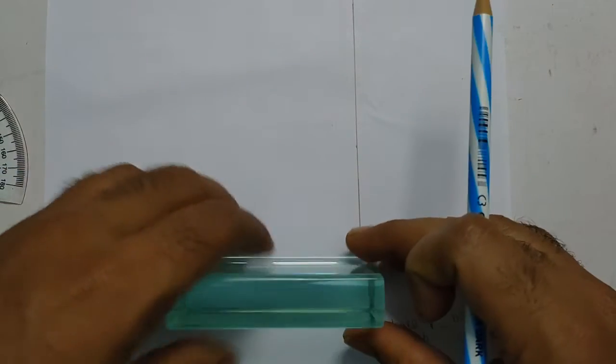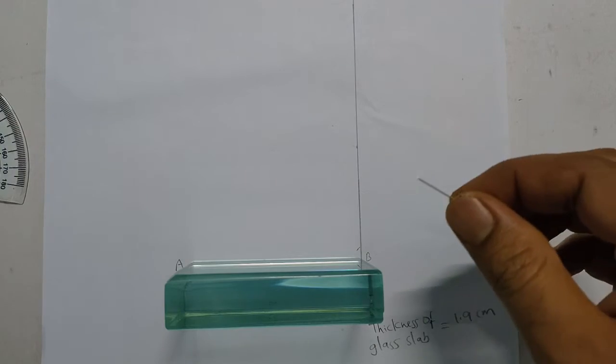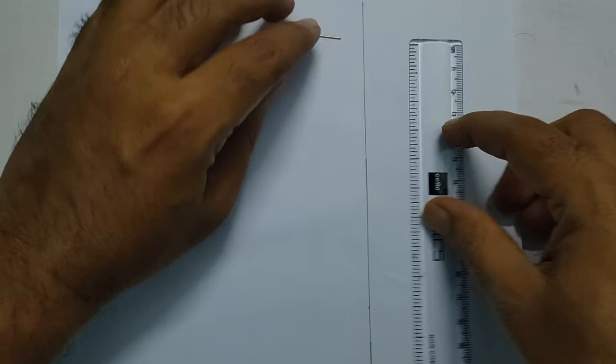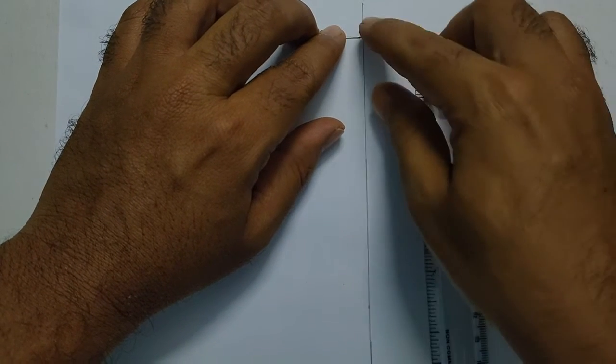Place glass slab again in the rectangle A, B, C, D. Now take a pin. Place at a point P in such a way that its length is parallel to the A, B on the perpendicular line.